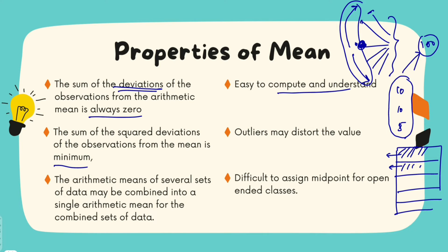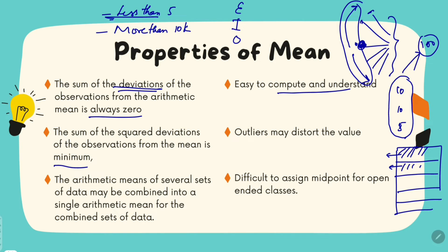When we talked about continuous classes, we had the exclusive method, inclusive method, and open-ended method. Open-ended means values like 'less than 5' or 'more than 10 lakhs.' Now, if it is an open-ended class, how will we assign the midpoint for them? That is a problem, because when you say 'less than 5,' we don't know whether it starts with 0 or 3 or even minus 3. What if it is temperature — then less than 5 would mean maybe even minus 20 degrees. So how do we assign the midpoint in such open class cases? That is the problem.